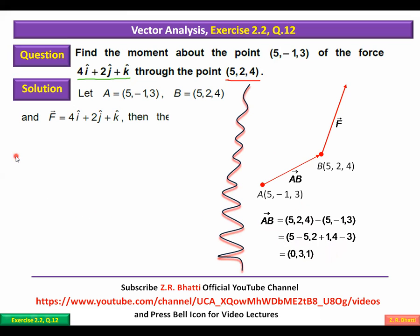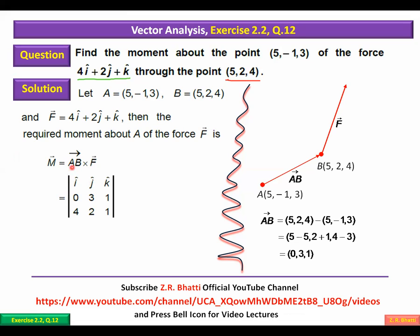Moment of the force ka formula hai: AB × F. Cross product ka formula ek 3×3 determinant hota hai jis ki first row mein i, j, k unit vectors hain, second row mein AB = (0, 3, 1), aur third row mein F = (4, 2, 1). Is determinant ko expand karein toh answer aata hai: i + 4j - 12k. This gives you the moment of the force through the point (5, 2, 4) about the point (5, -1, 3). Hopefully aap ko clear ho gaya hoga.